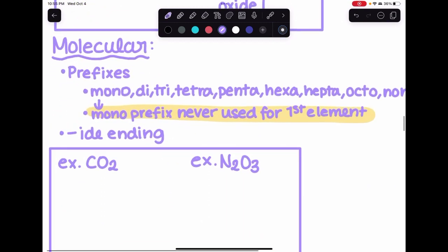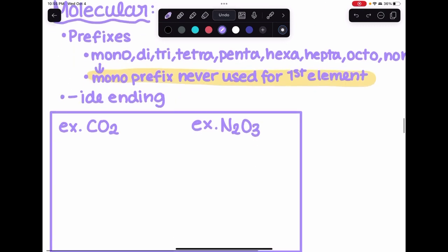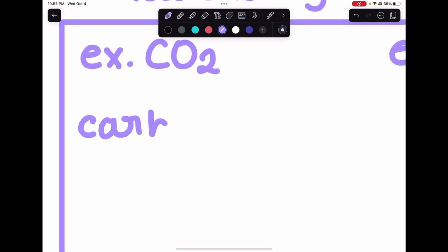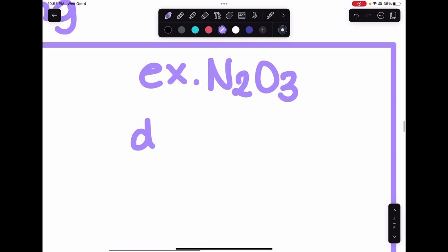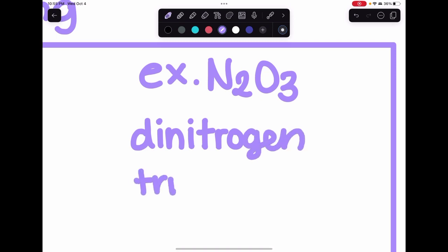Molecular: remember the prefixes and the -ide ending. Remember mono prefix is never used for the first element. This one's a very simple example: it's not monocarbon dioxide, it's carbon dioxide because you don't use the mono prefix. This one uses the di prefix: dinitrogen trioxide. Simple, easy.